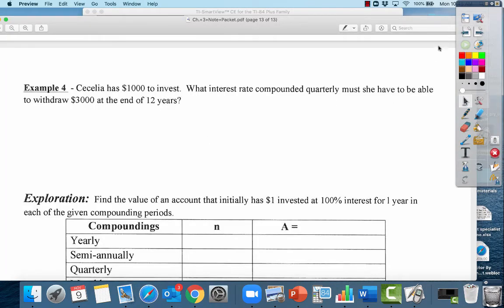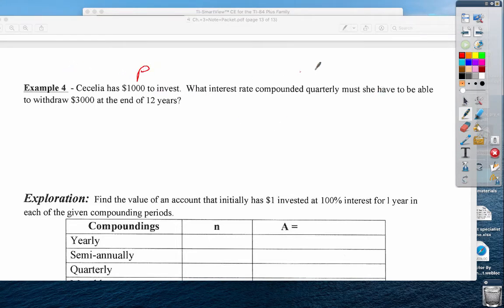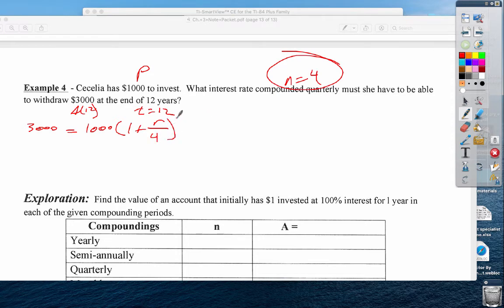Cecilia wants to invest $1,000, that's her principal. What interest rate compounded quarterly, n is 4, must she have to be able to withdraw, this is amount after 12 years, and time is 12. She wants to end with 3,000, start with 1,000, so 3,000 equals 1,000 times 1 plus the interest rate divided by 4 raised to the 12 times 4, which is 48. First thing I'm going to do is divide both sides by 1,000. That means Cecilia is trying to triple her money. You'll see some problems that say I want to know how long to double my money or triple my money. They won't give you dollar values. That means you can make up dollar values.